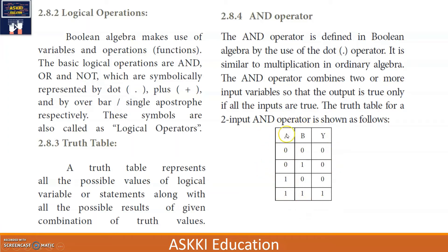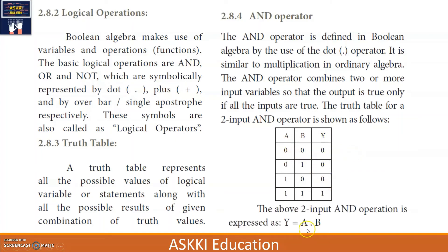For the two-input AND truth table with inputs A and B — the output Y is true only when all inputs are true. Only the row where both A and B are 1 gives output 1; the rest are 0. The expression is Y = A·B, which works like multiplication: 0·0=0, 0·1=0, 1·0=0, 1·1=1.